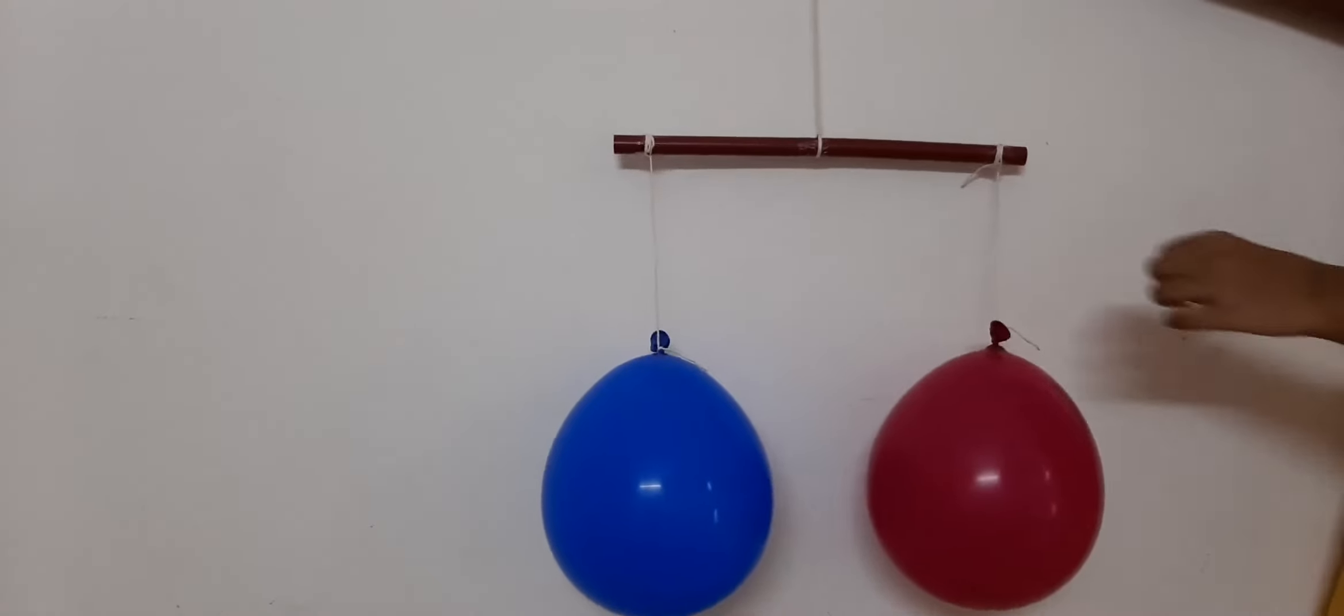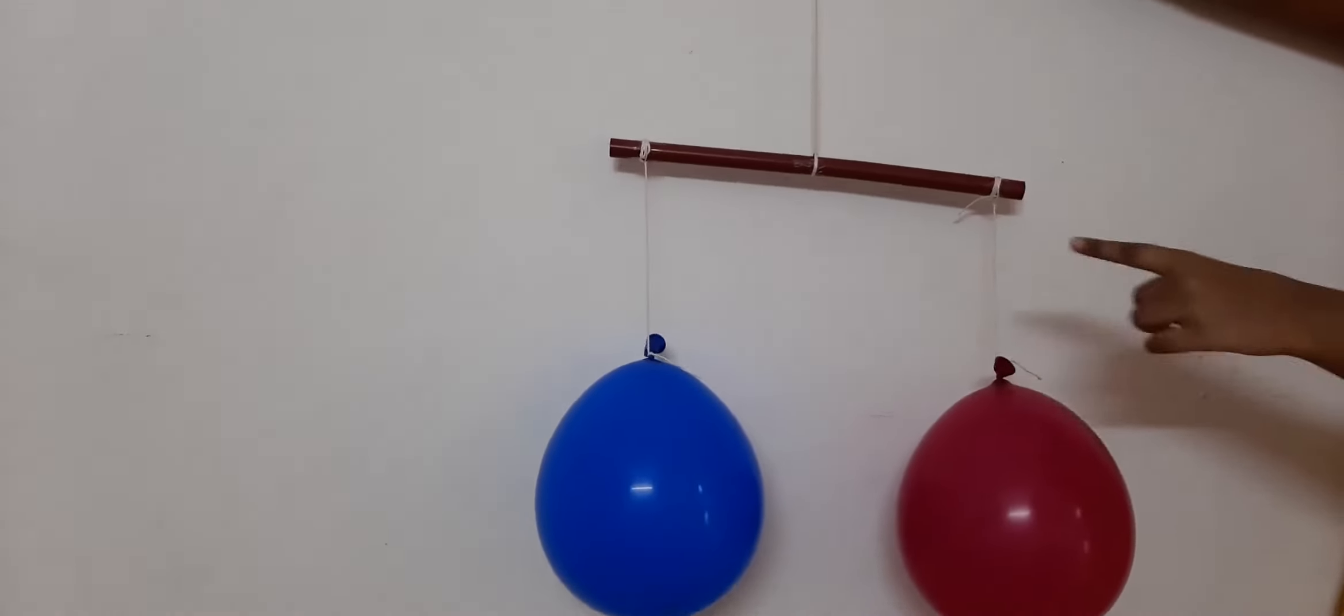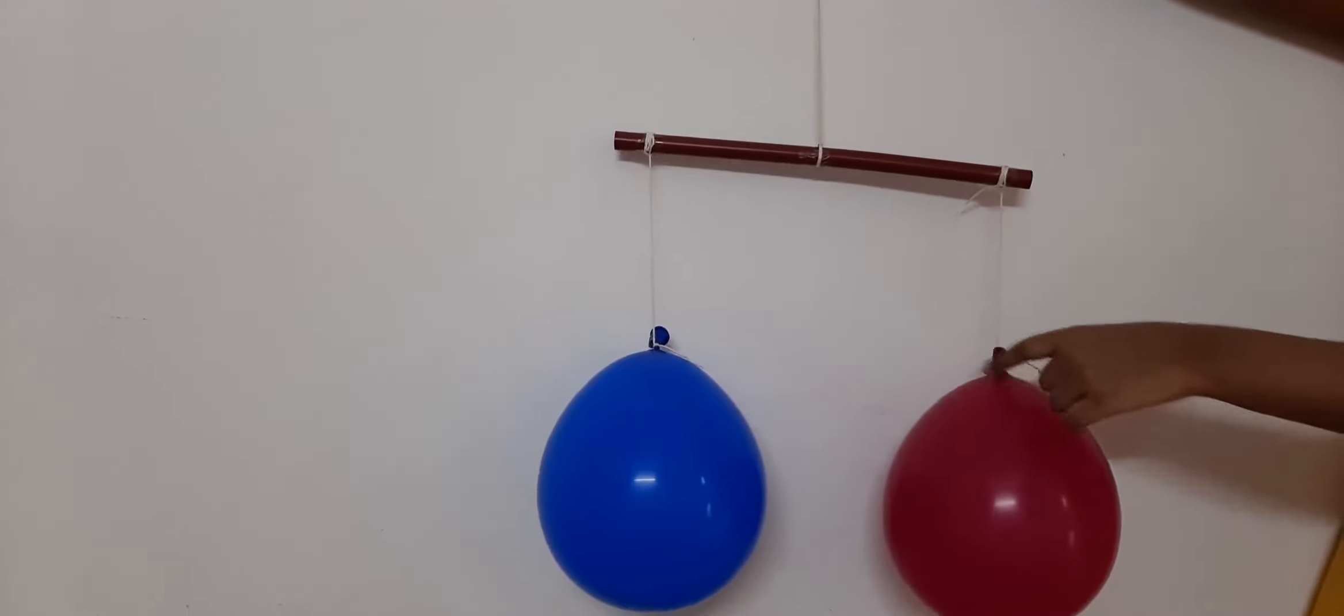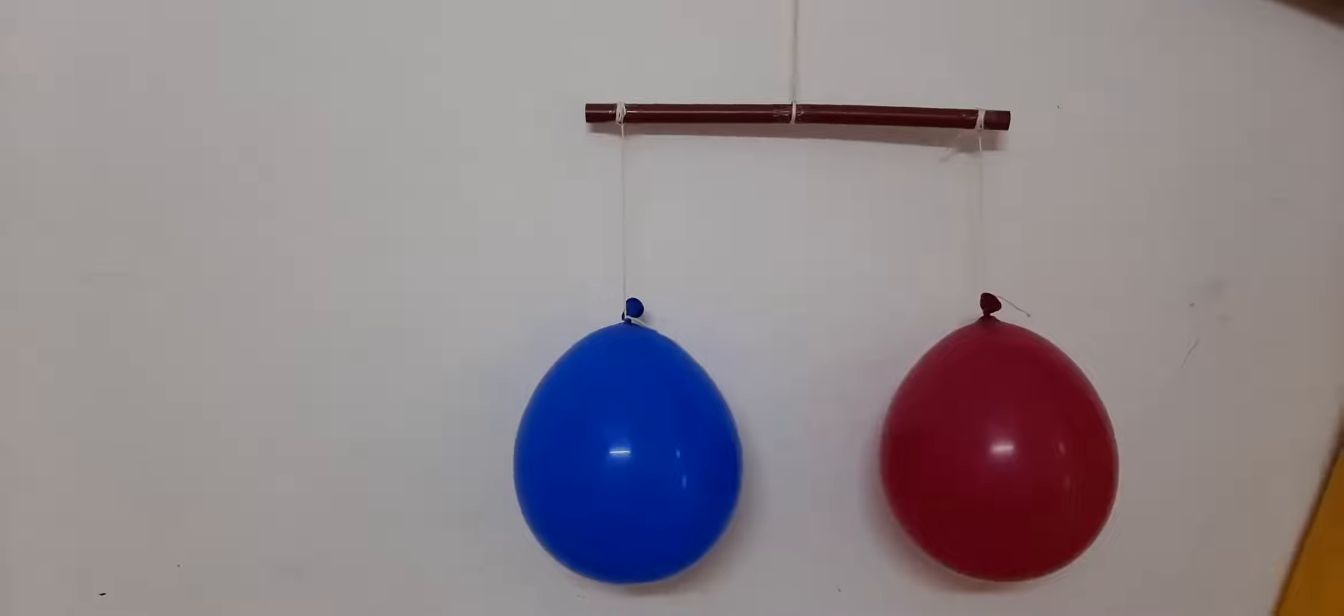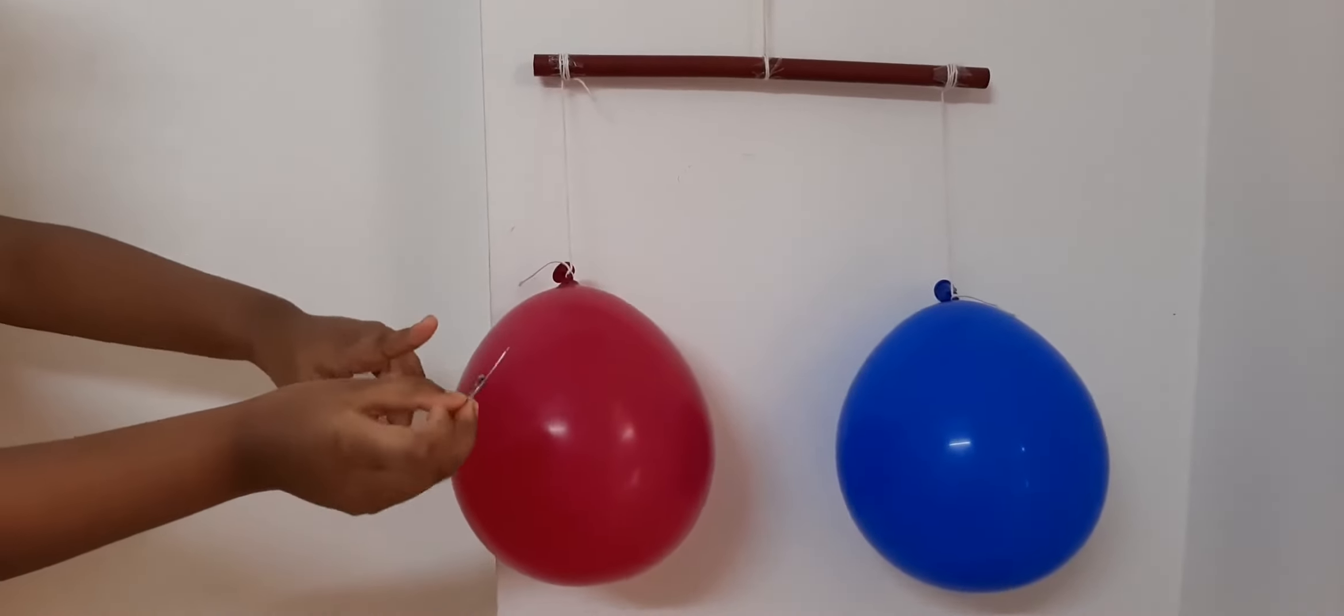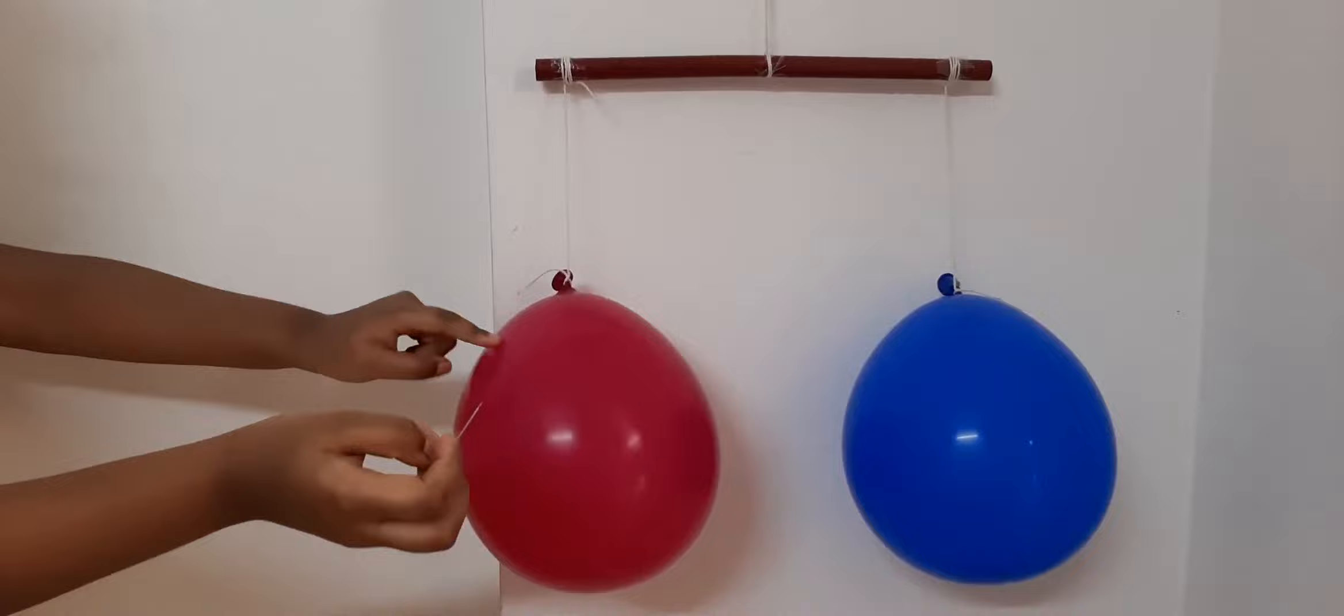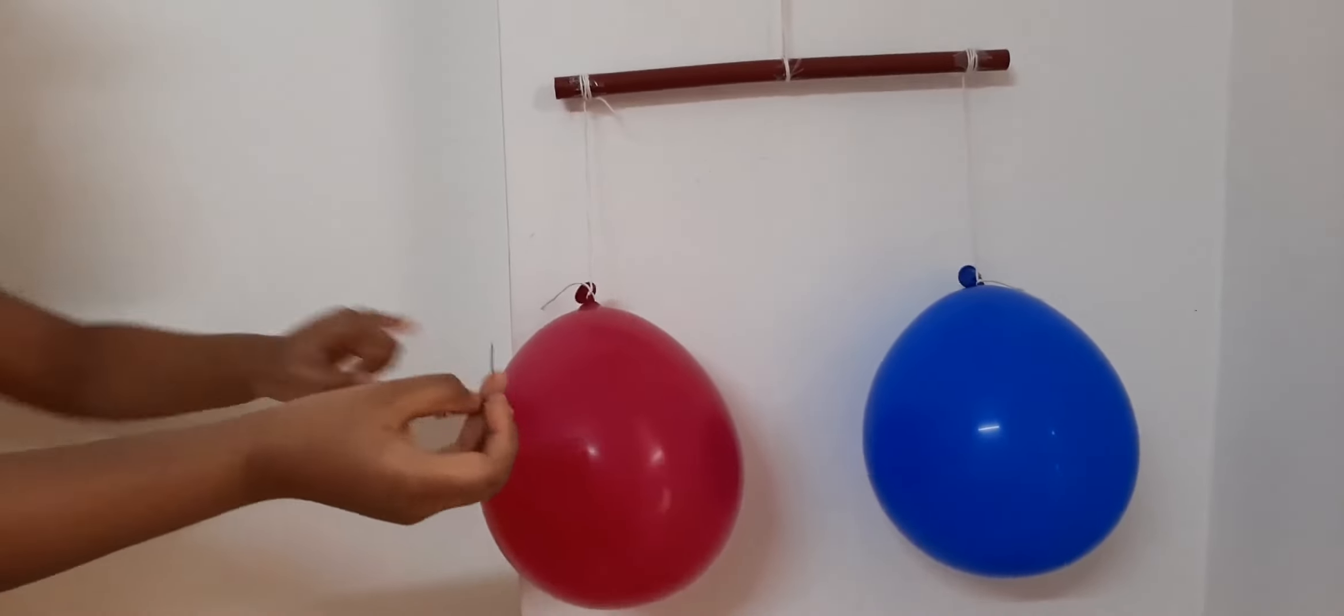Okay, the balloon is tied to the rope on both sides and we can see the balloons have the same weight. Two balloons have the same weight. Okay, by using this next step, by using this pin I am going to poke this pink color balloon.